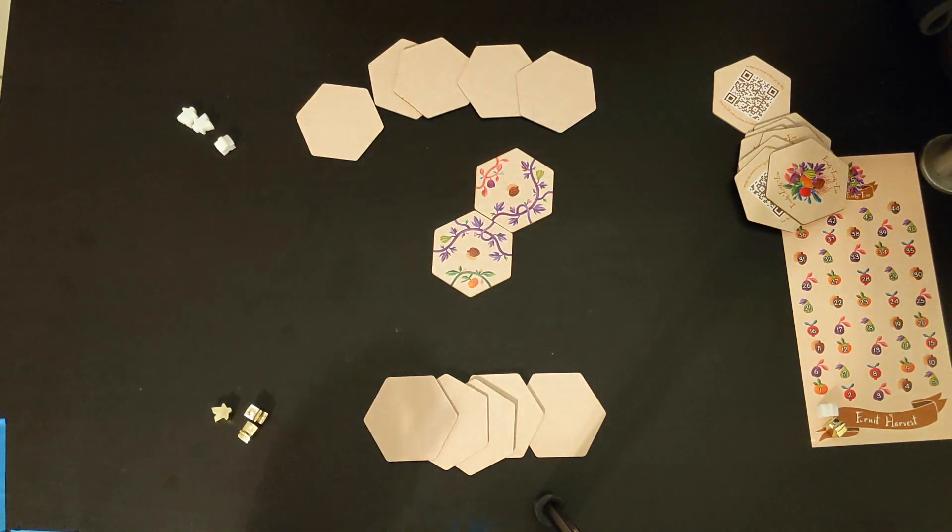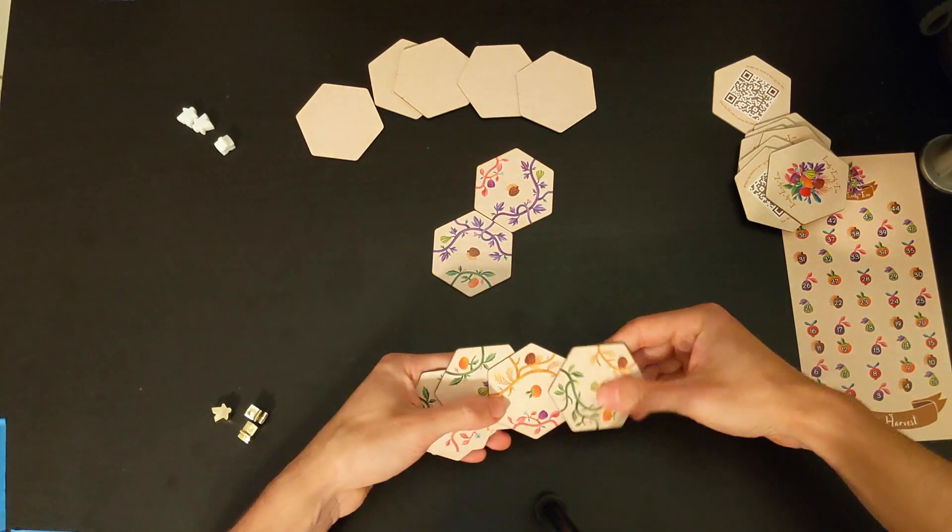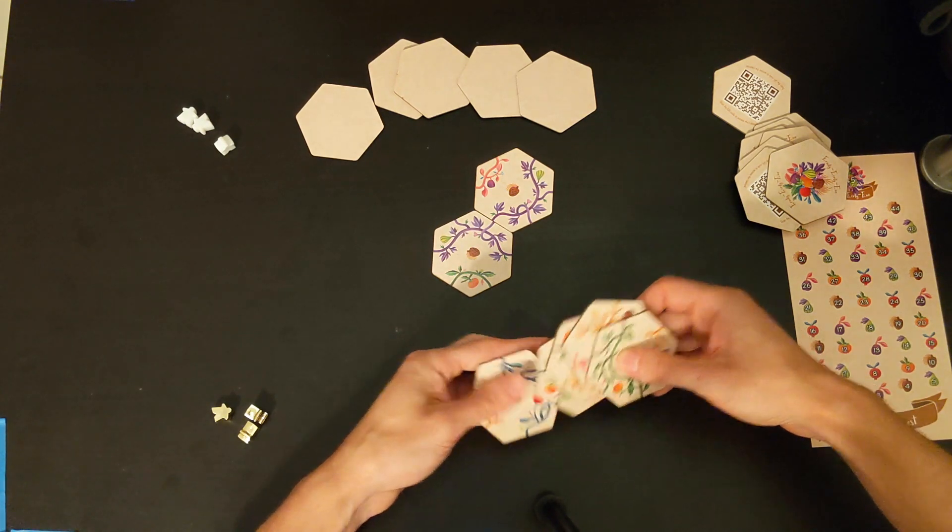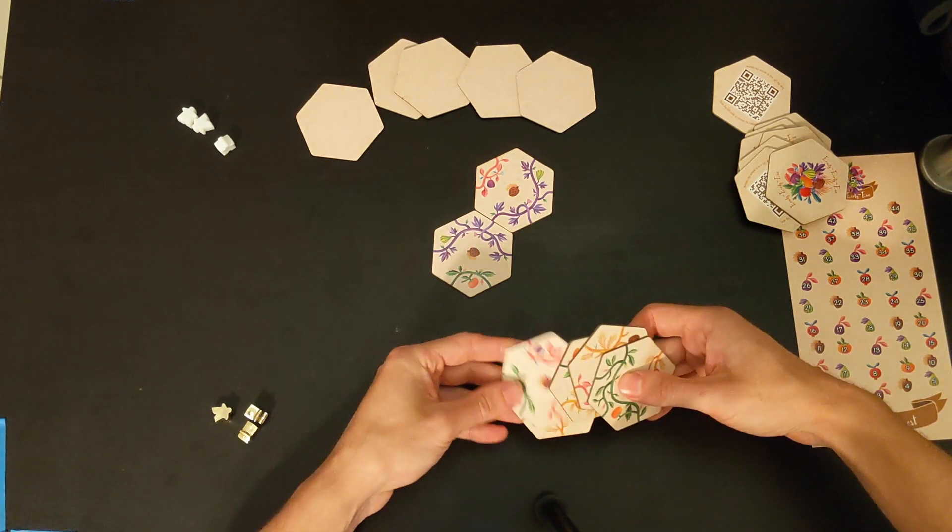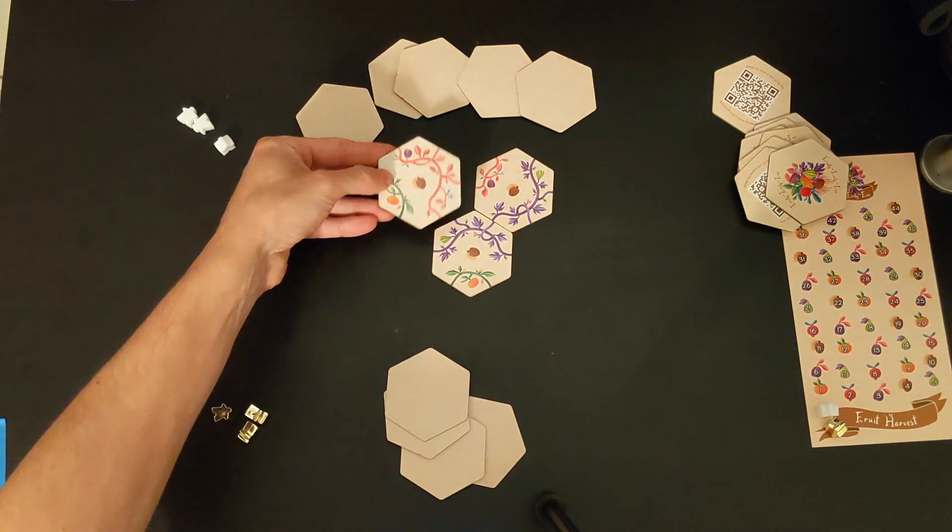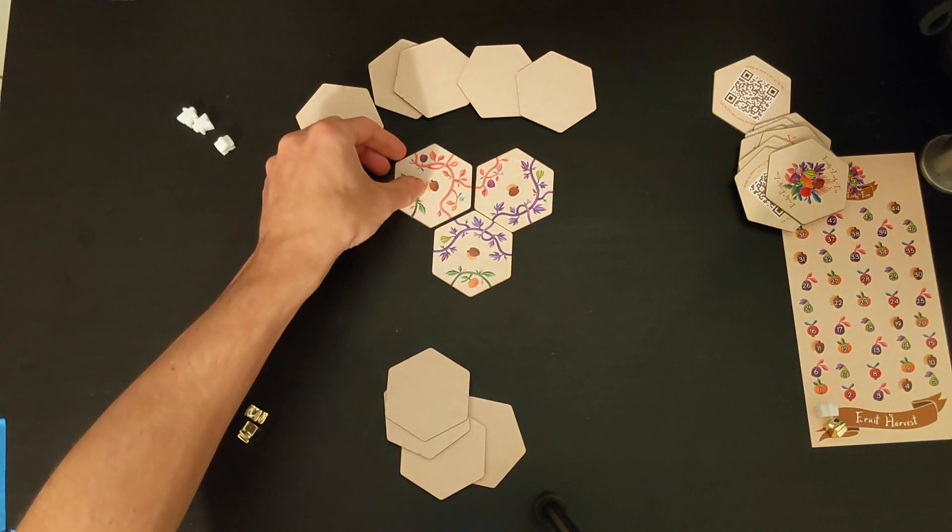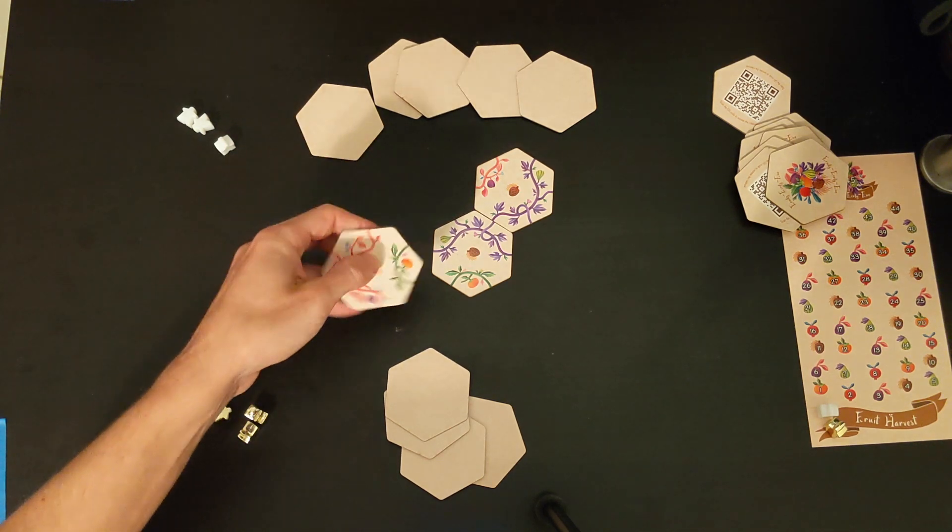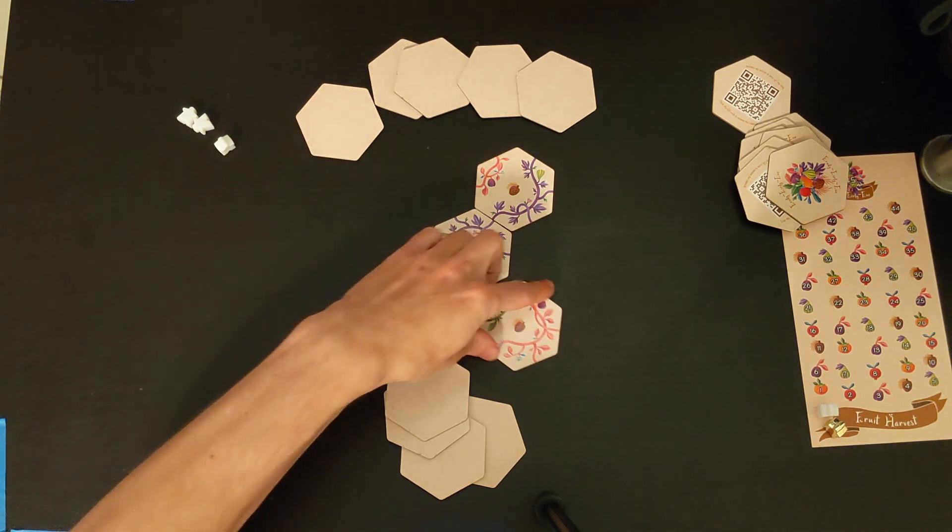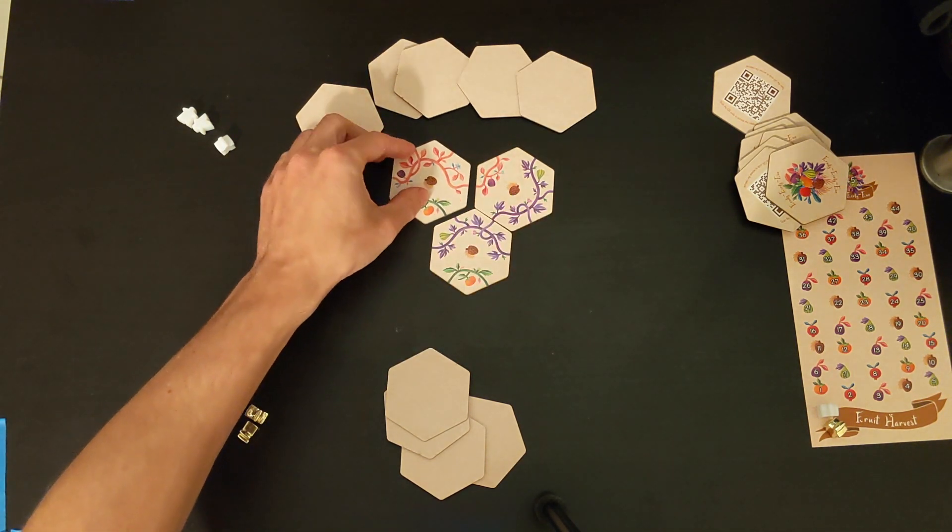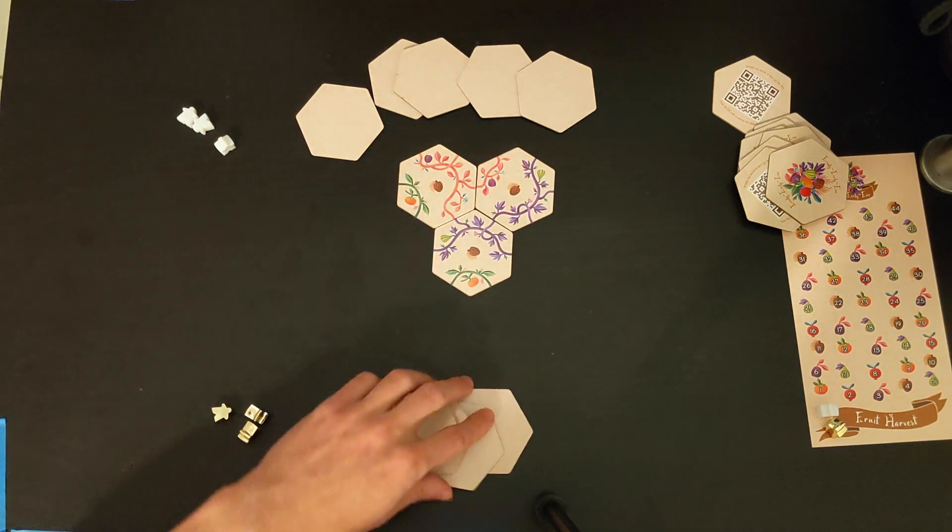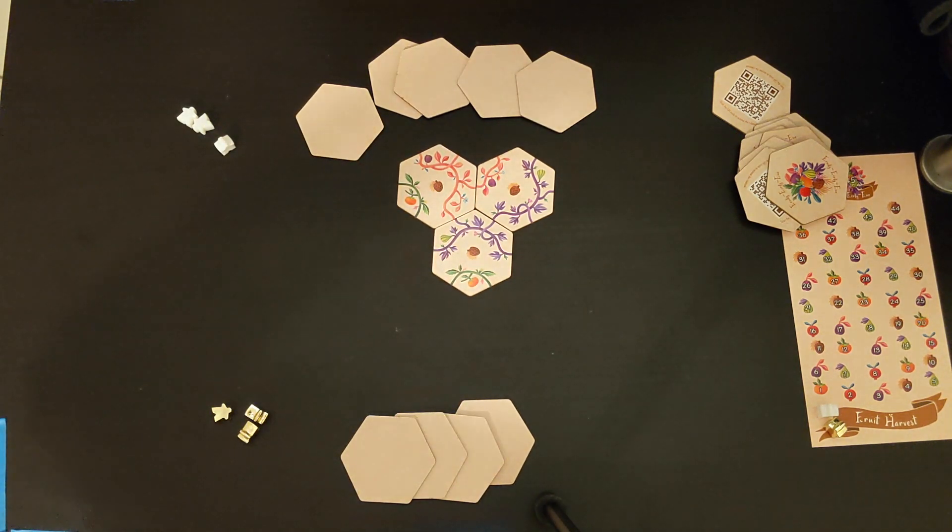Back to player one. So now, player one's conniving over here. They're going to lay down, say, this tile. Now, they could either lay this tile here, or they could lay it over here. And it doesn't, I don't think it makes a difference right now, but they're going to, let's say they lay it here. That's the end of player one's turn, and back to player two.